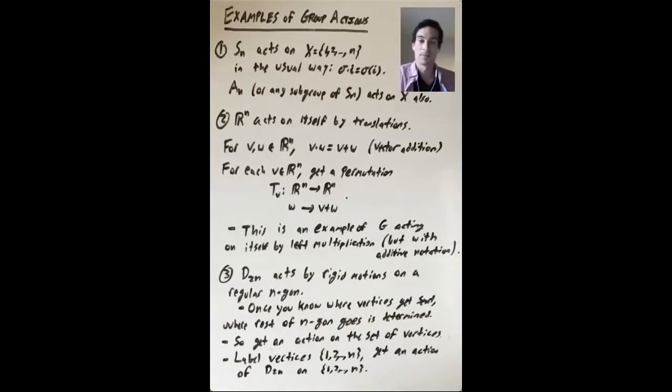So this gives an action on the regular n-gon. But once you know where all the vertices get sent, where the rest of the n-gon gets sent is completely determined. So you can also just think of this as an action on the vertices. And then, once you name the vertices, you just label them in some way, 1, 2, up to n, then you get an action of D2n on the set from 1 up to n. So I'll pause and erase and do a few more examples.